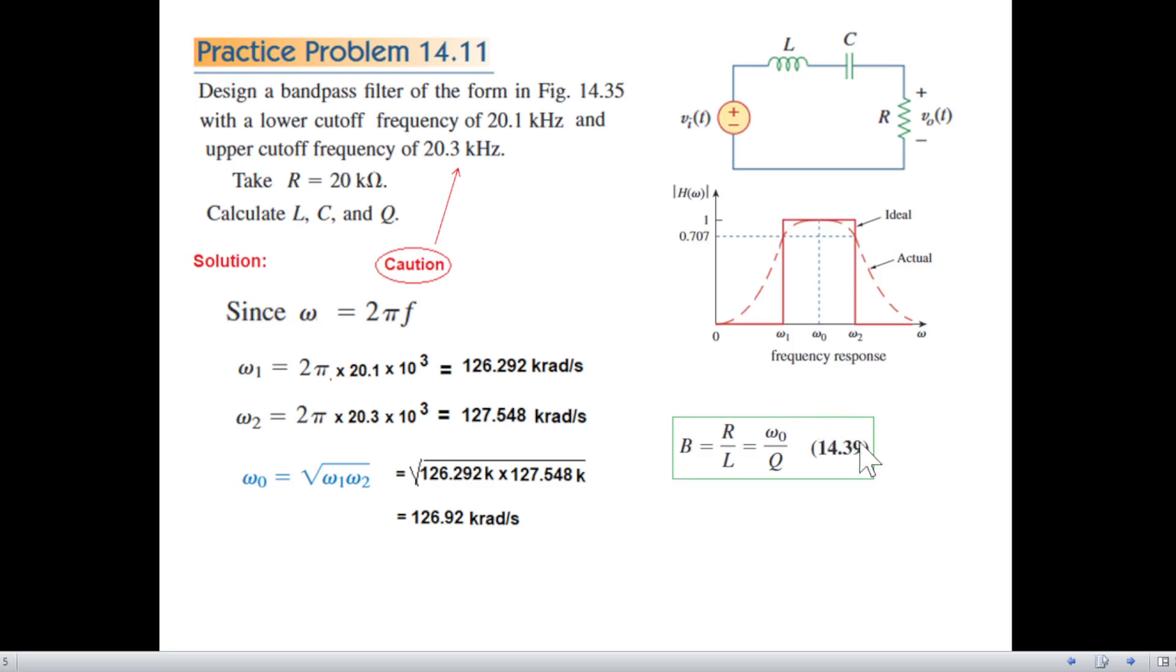And now we can use this formula or this formula. So let's see, first of all to find L we have to find bandwidth or using this formula. So let's find bandwidth first of all. Bandwidth is omega 2 minus omega 1, this is the bandwidth. And now we can find L because R is already given. So from here we can find L to be R over B, the bandwidth.